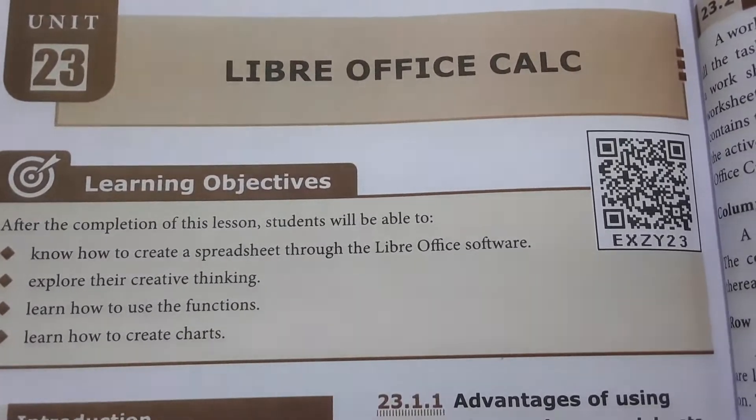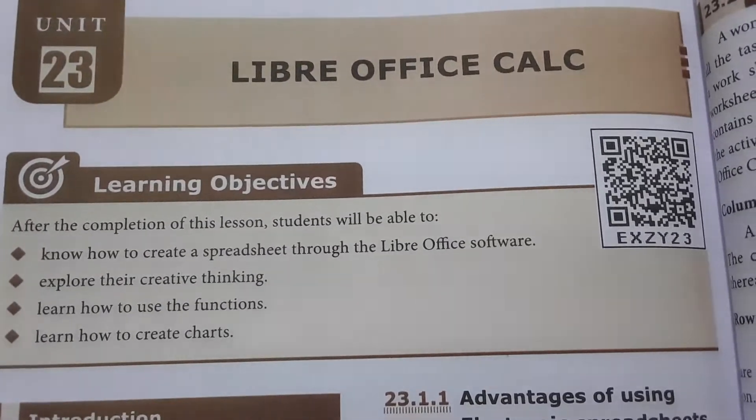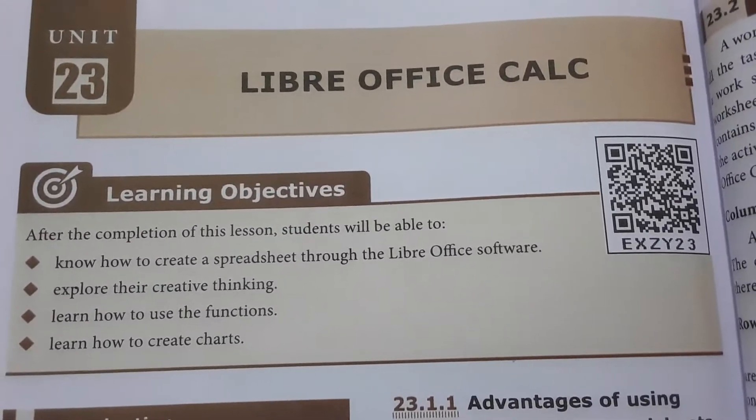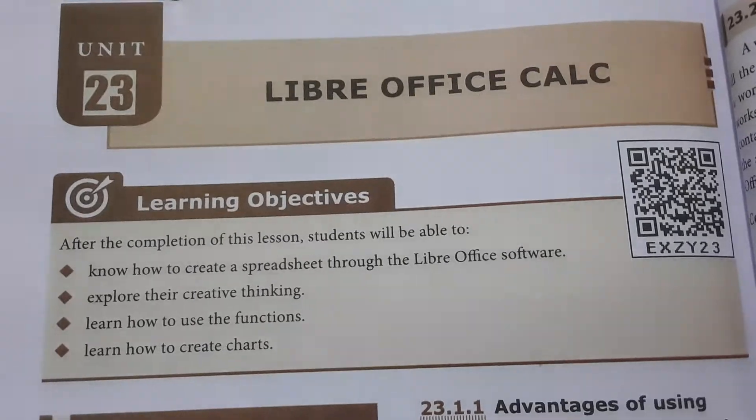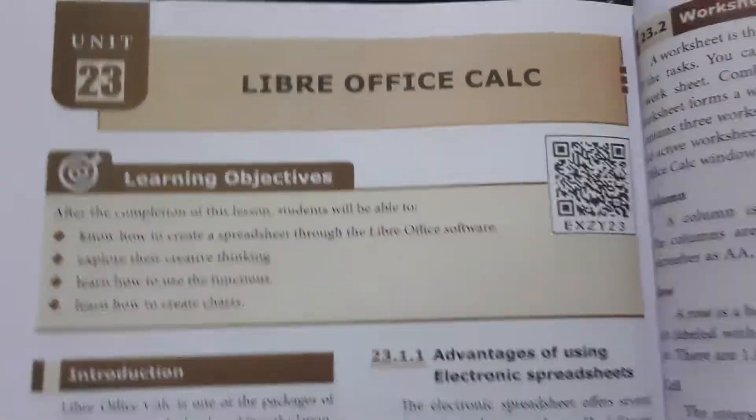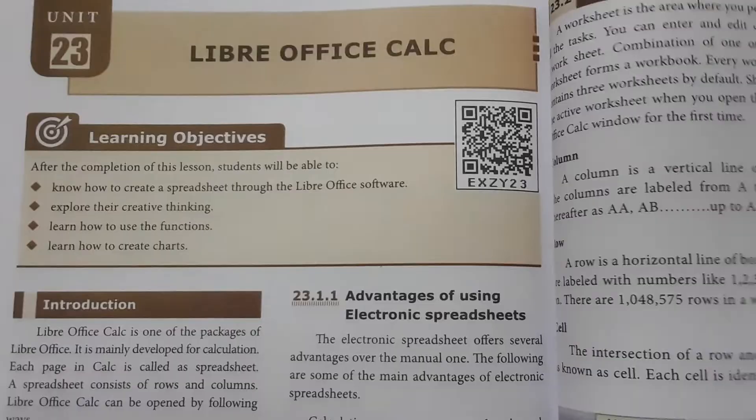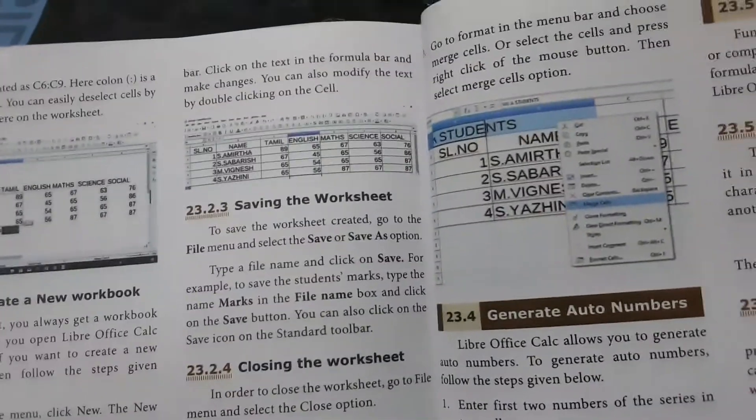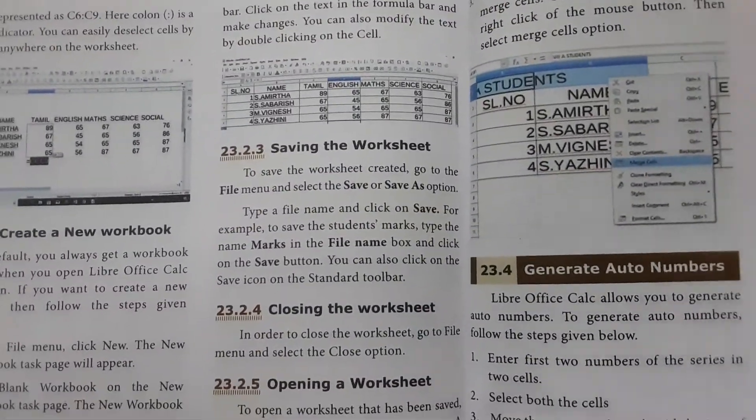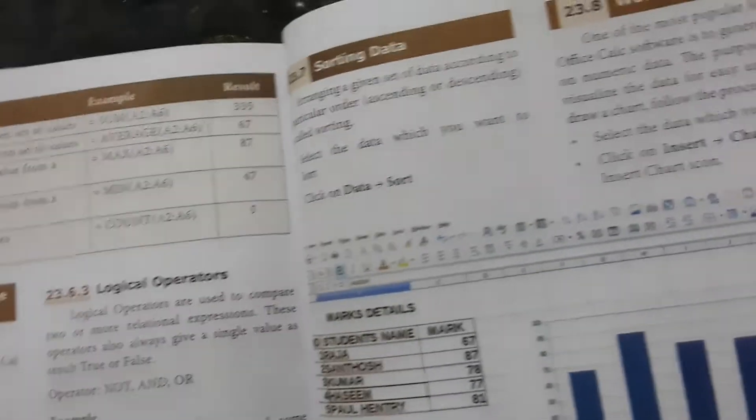This is from Standard 8 Science Book, Unit 23 LibreOffice Calculation. This is the simplest and smallest lesson in this science book, so it has only a limited number of book pack exercises. Let's see it before entering these book pack evaluations.